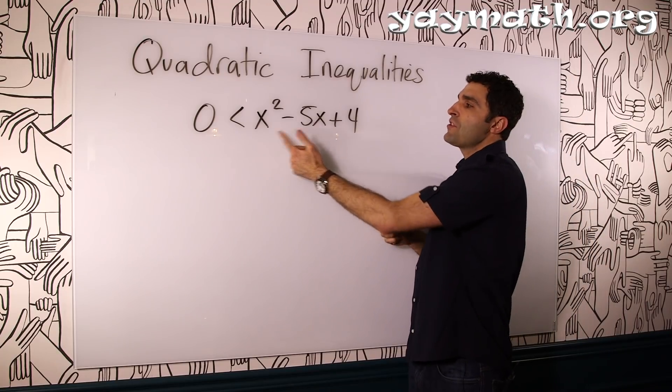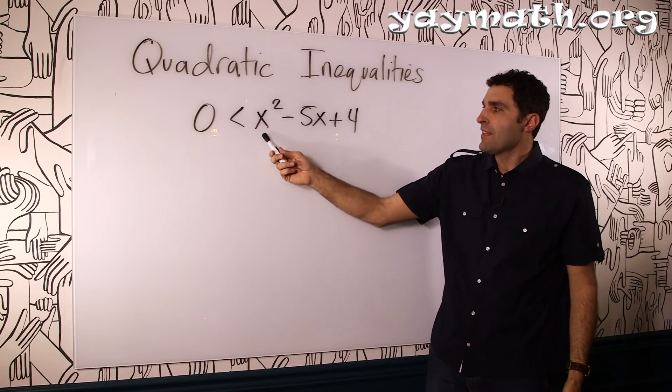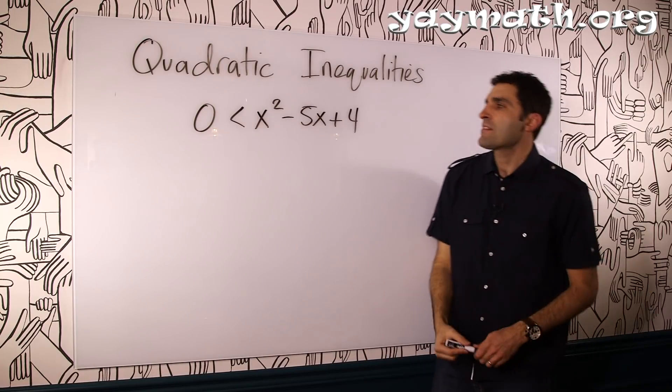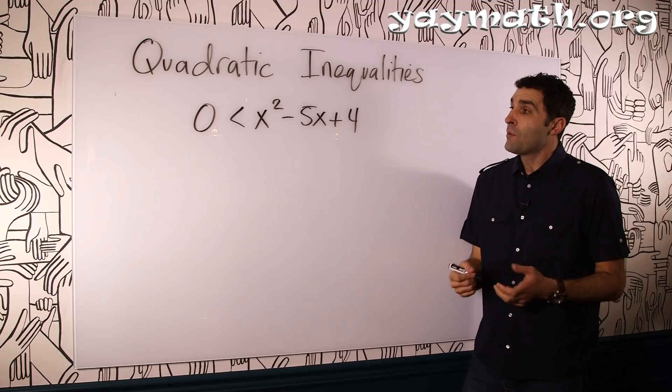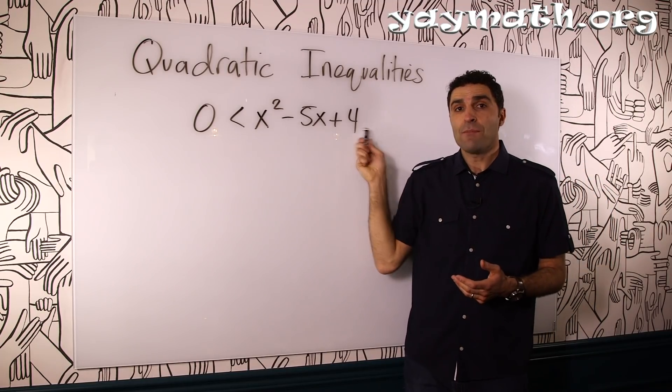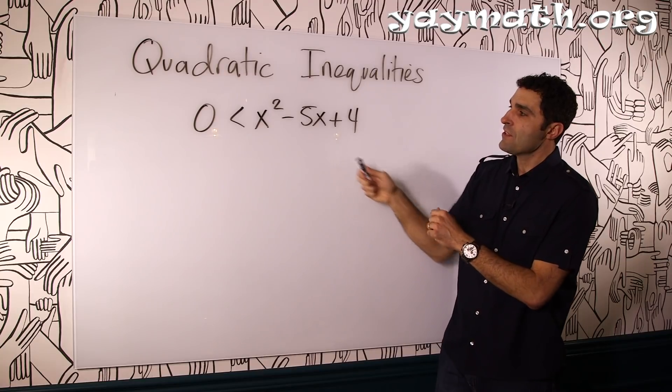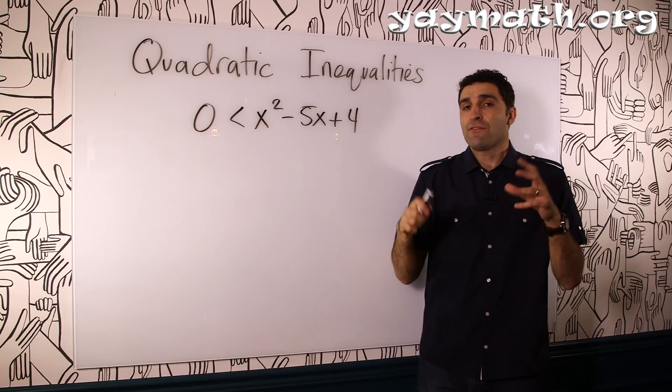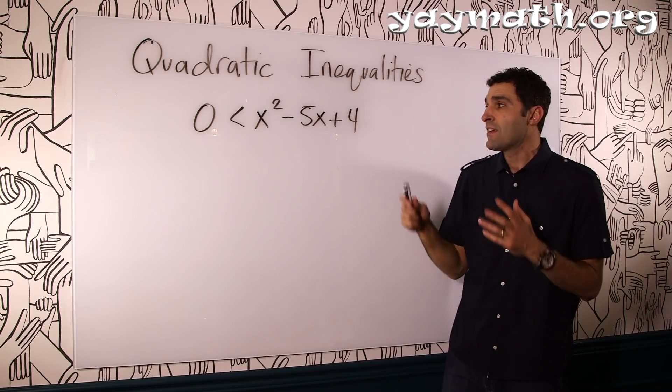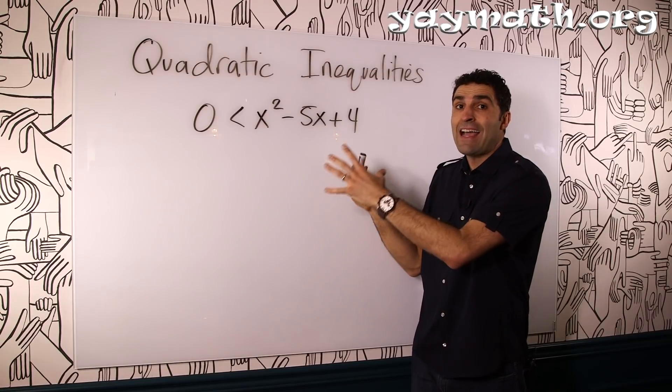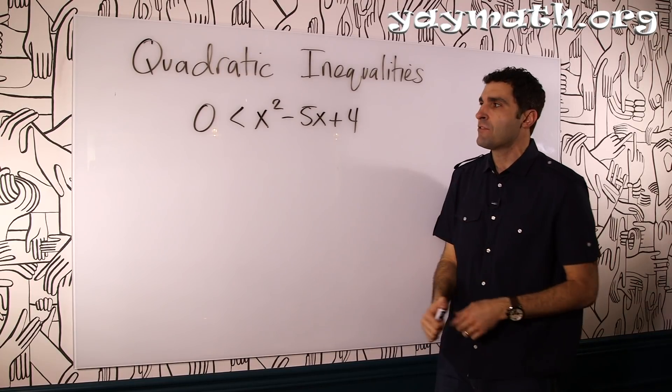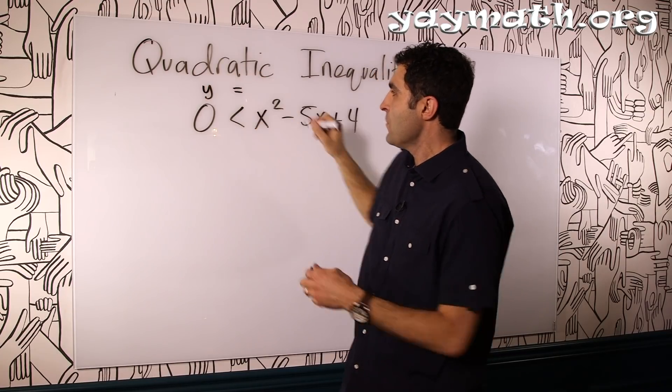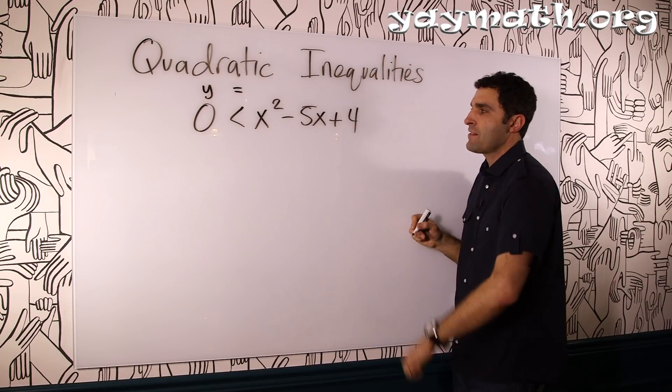So the question is what are the solutions for x? What are we allowed to plug in here and here such that this whole right side is greater than zero? All right, so this is the idea. What would help first is to recognize that this is a parabola. This is a quadratic function because you see it's x squared. And so if it's a parabola it could be a great idea for us to actually get a fix on what this parabola looks like to help us guide us to the solutions.